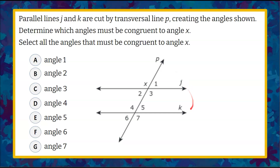Our parallel lines and our transversal. We're asked to determine which angles must be congruent to angle X, and we are to select all the angles that must be congruent to angle X from this list of seven angles.